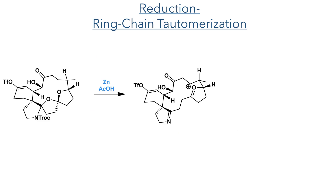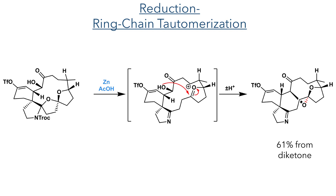Taking this compound forward, it was then reduced with zinc and acetic acid. Rather remarkably, this had the effect of performing a ring-chain tautomerization. During this reaction, the Troc group is lost from the nitrogen and the imine is regenerated, while the acetal is reduced. An intermediate of this reduction is an oxonium ion that can be intercepted by the C-15 hydroxyl group, forming an acetal that spans the macrocyclic core and completes the target portamine skeleton.